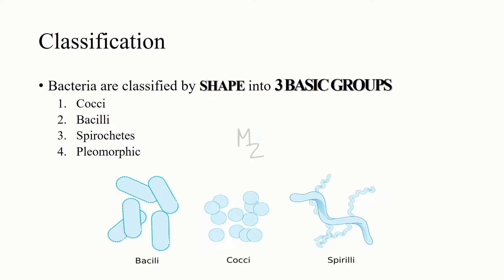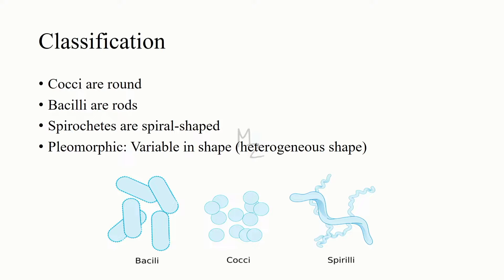The cocci are round, as you can see in the middle. The bacilli are rods, as you can see on the left side. And the spirochetes are spiral-shaped, as you can see on the right side.